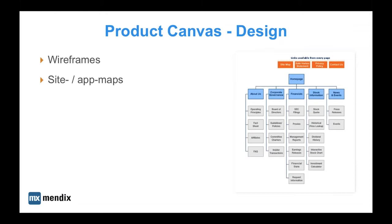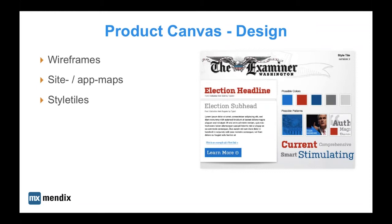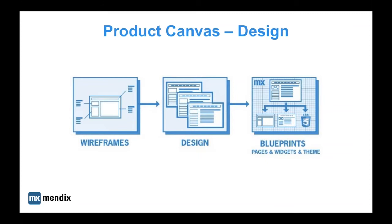Of course, a company may already have great documentation and guidelines covering design principles. All the assets discussed should basically cover the design of the application, which in turn can be translated into the blueprints covering pages, use of widgets, and theming. A good tip for remaining agile is to design a system or design framework instead of separate individual pages — this will not only secure the agility in design but also provide a good fit with the Mendix platform.